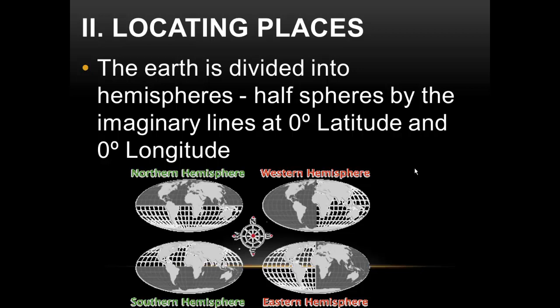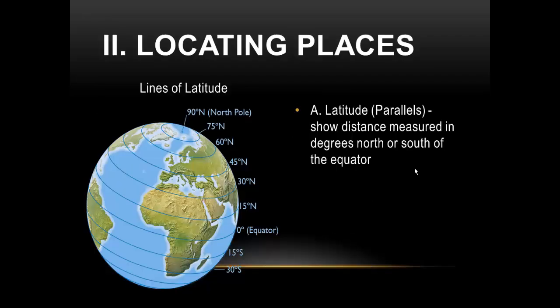Hemispheres — what they are — they are half spheres. The word 'hemi' means half, 'sphere' means circle. The Earth is roughly a circular shape, so they are half spheres. The Earth is divided by the imaginary lines at zero degrees latitude and zero degrees longitude, and we will get into this a little bit more in a moment.